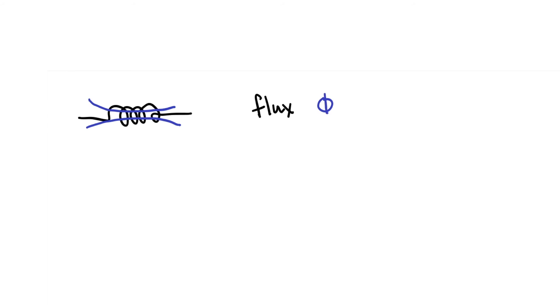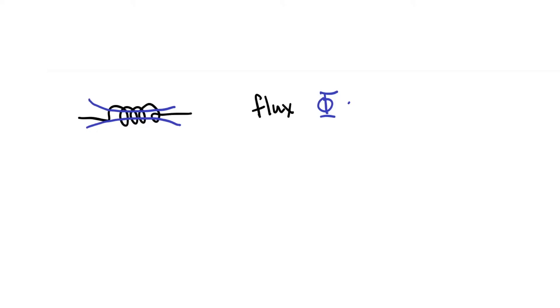The symbol that we like to use for flux is a capital Phi. If you have more current flowing through an inductor, then there will be more flux lines. So I can write a simple equation that flux equals L times I. So I is the current. More current, more flux.